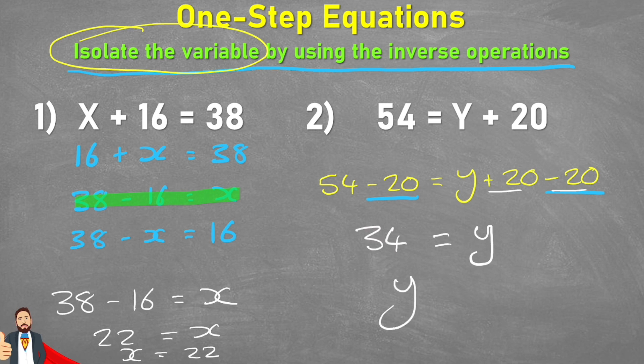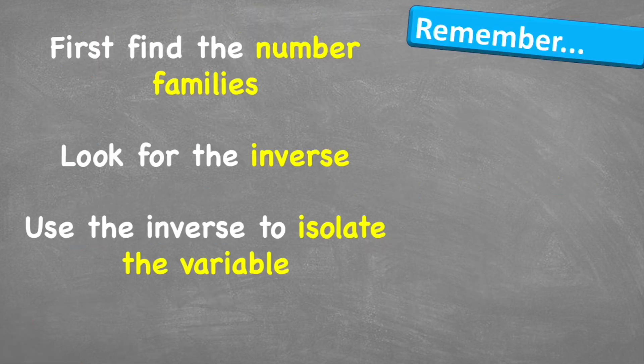And then 54 subtract 20 on the other side leaves me 34. So 34 equals y, or y equals 34. And there you go.